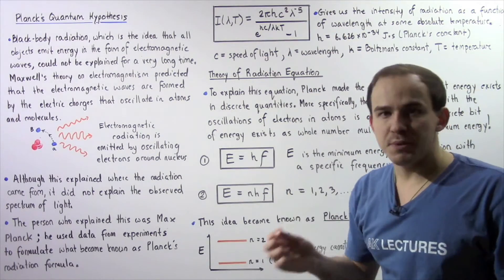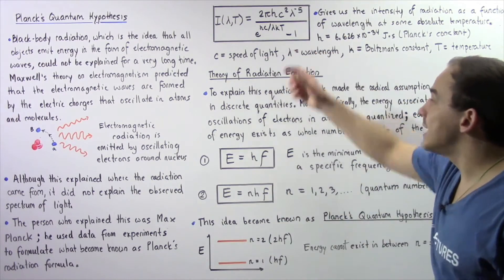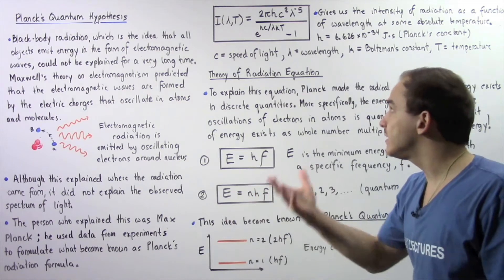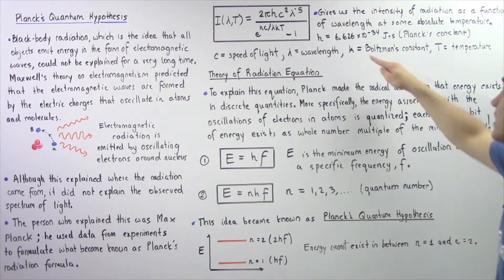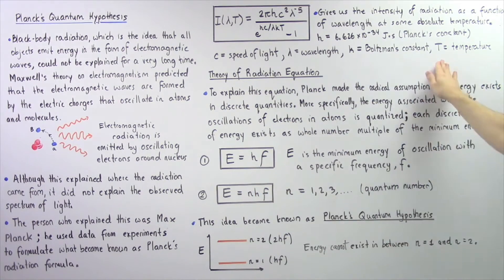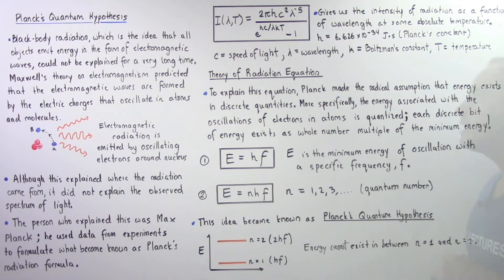Now c is the speed of light. λ is the wavelength of the particular wave that we're discussing, k is the Boltzmann constant, and t is our temperature.